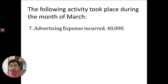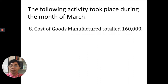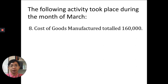Number seven: advertising expense incurred is $40,000. The entry is debit advertising expense $40,000, credit advertising payable $40,000. These will be classified as selling or distribution costs in the income statement.